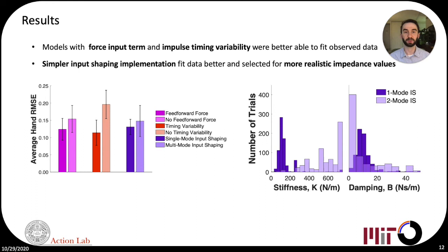Across models, those that included a feed-forward force input term and allowed for impulse timing variability performed better than those that did not.